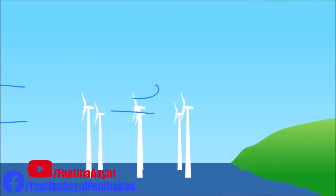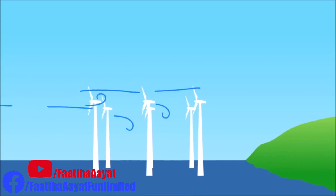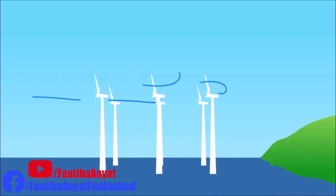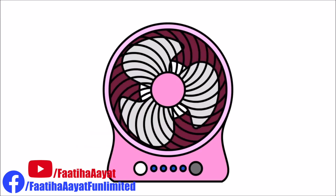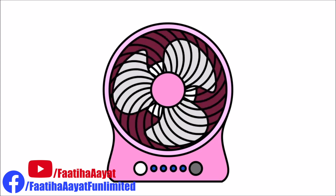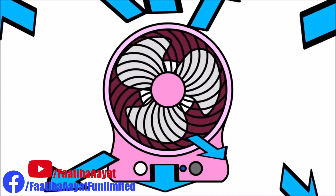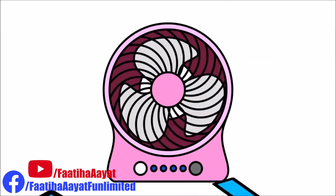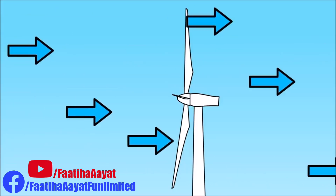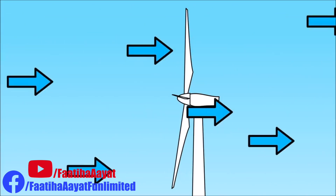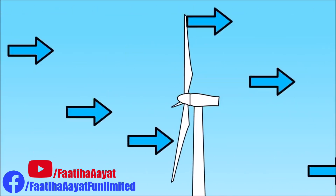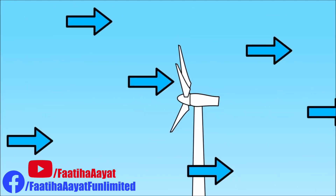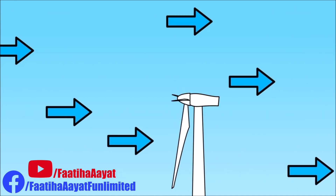The air pushes the windmills to spin and to create electricity. Unlike fans that push the air out, windmills don't do that. The air pushes the windmills to spin, and this is the opposite of fans.